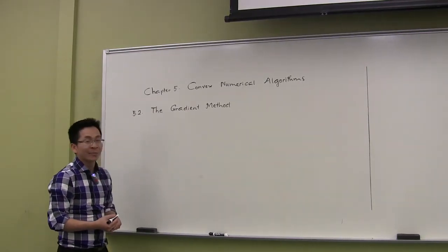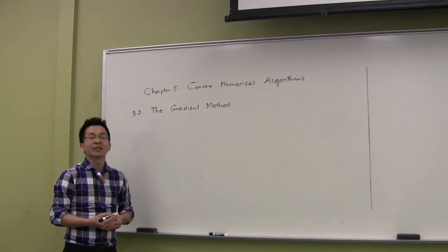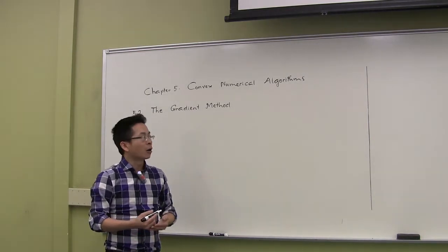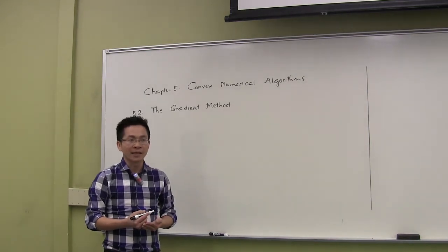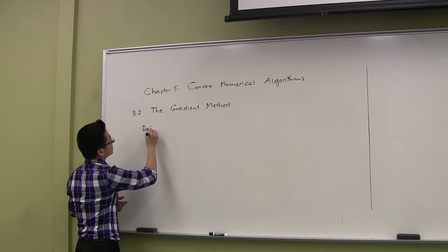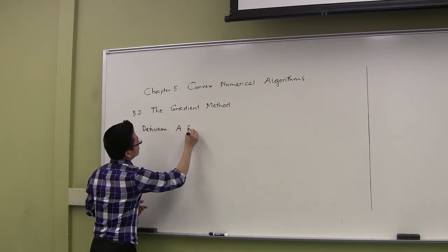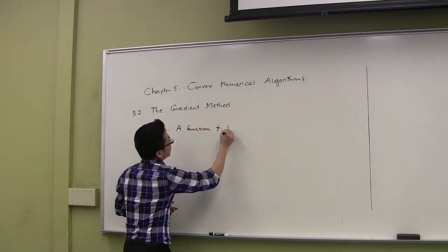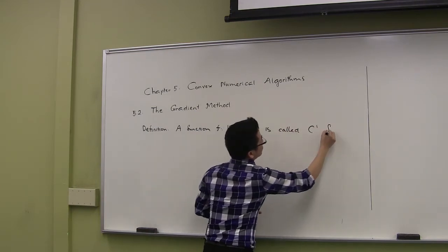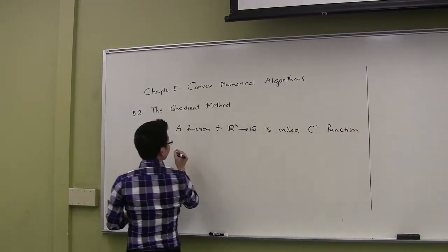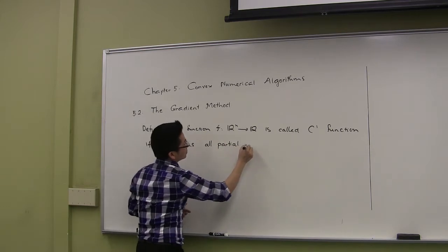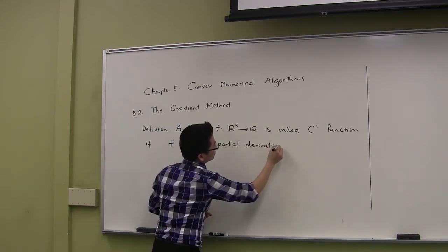In today's lecture I'm going to talk about the gradient method. This is a particular case of the subgradient method when the function f involved is differentiable. To make the presentation simple, I only focus on the case where the objective function is a C1 function. A function f from Rn to R is called a C1 function if f has all partial derivatives which are continuous functions.